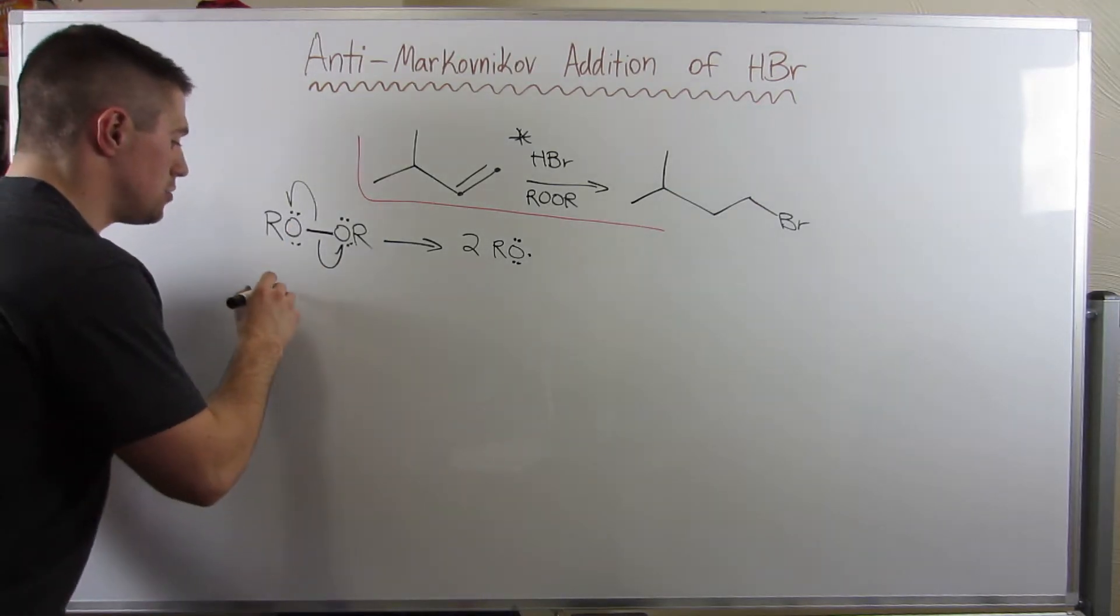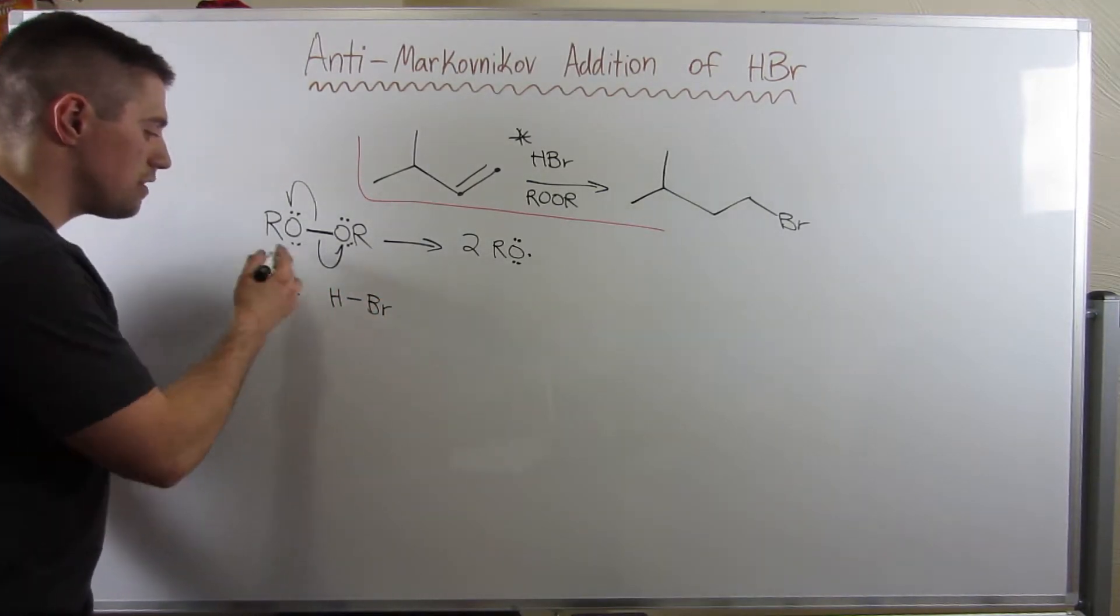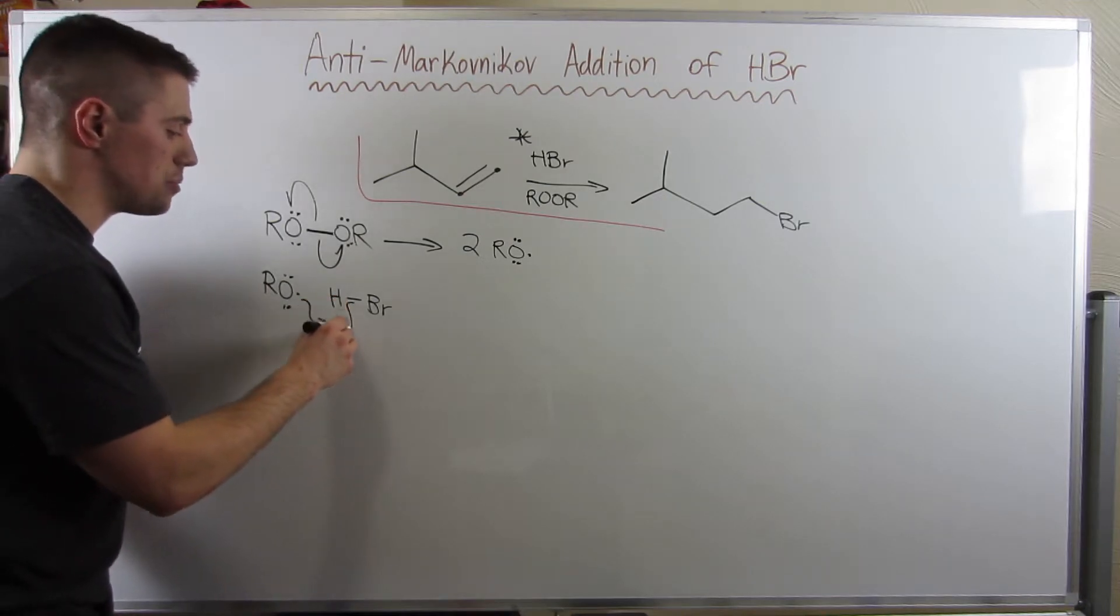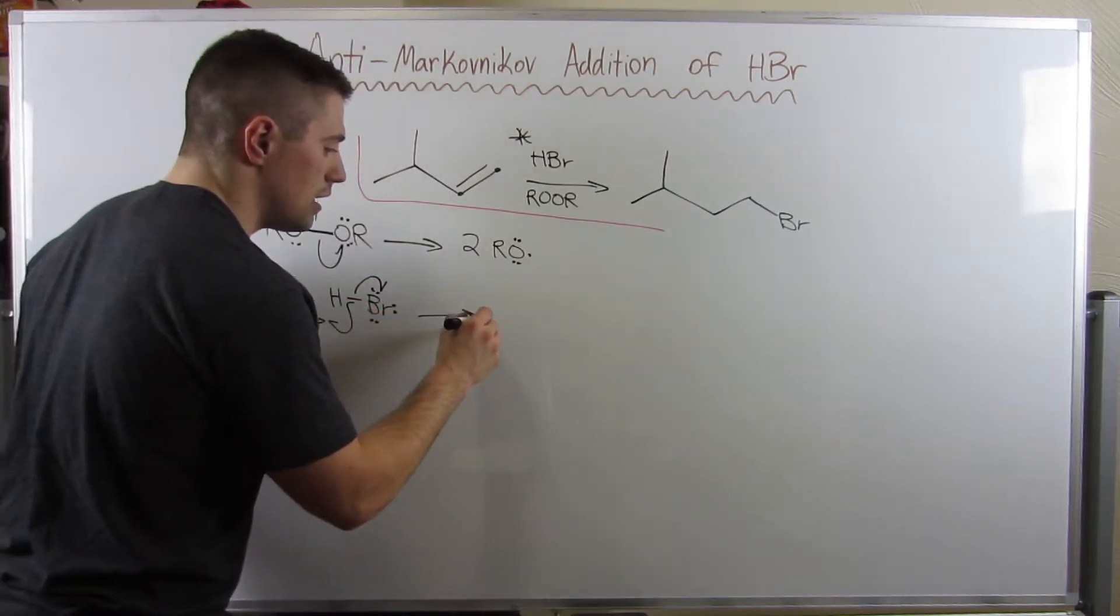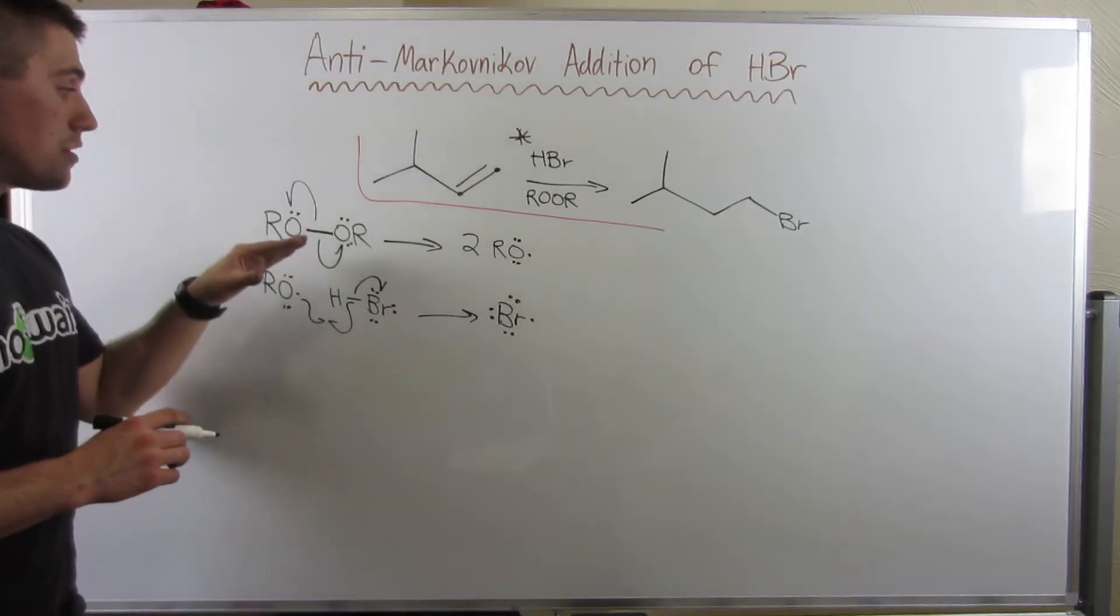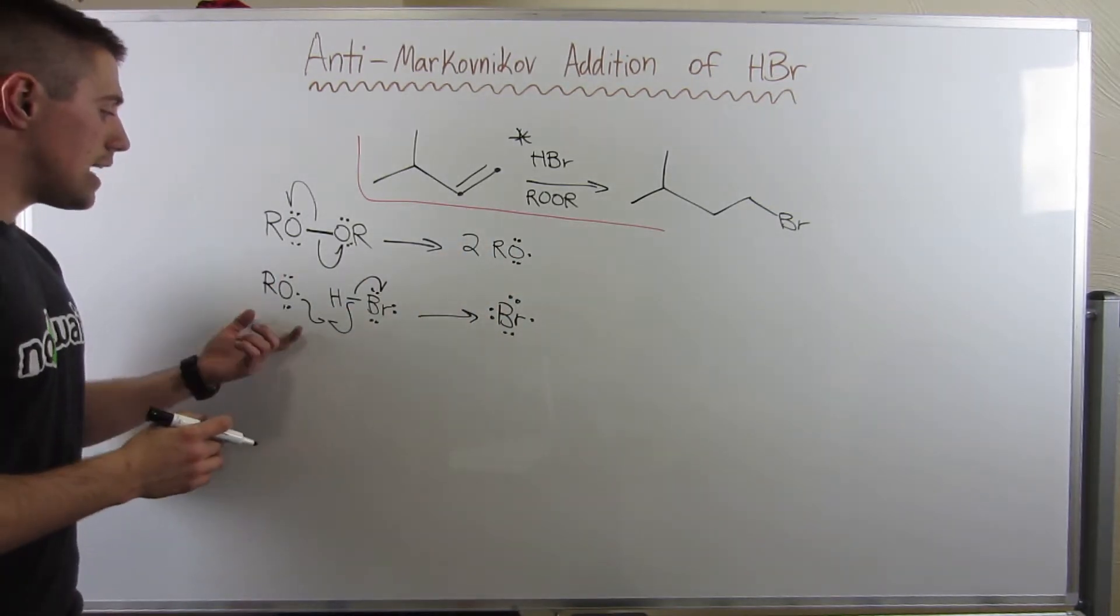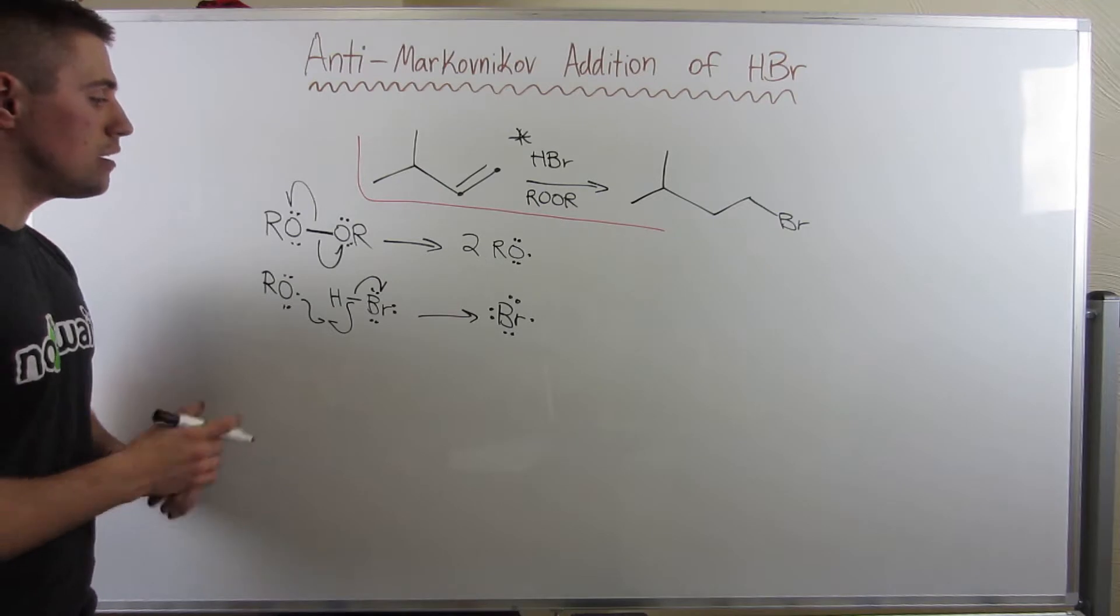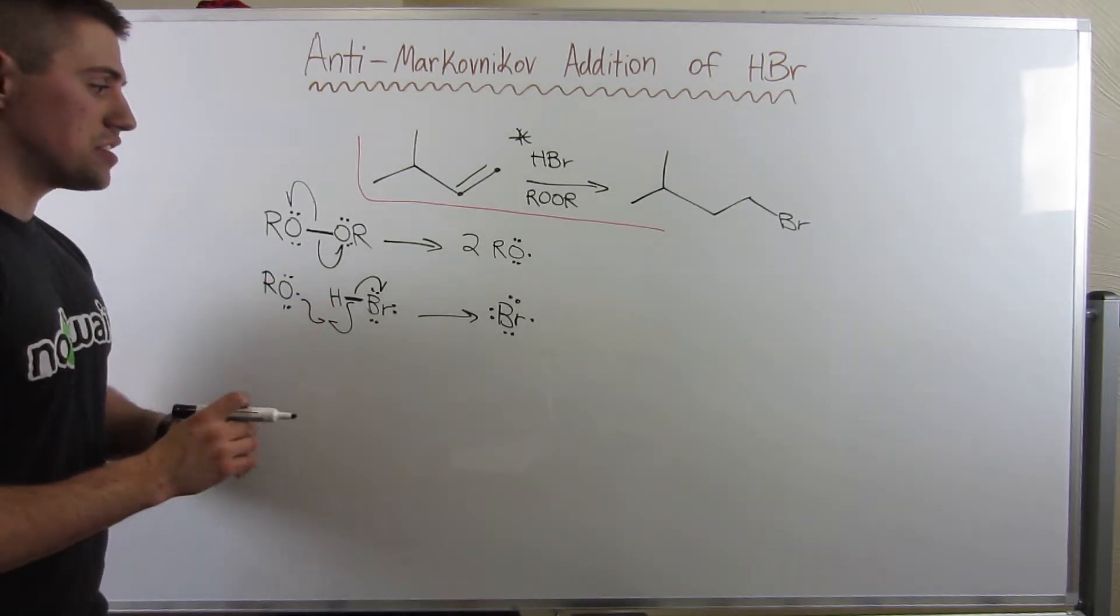So we're going to make two of these radicals right here, because these guys both have two electrons, two electron pairs to start with. This is like the initiation step. Then what's going to happen is you take that radical and you're going to move on over to HBr. And this radical oxygen is just going to pick off, he's going to abstract this hydrogen in HBr, which leaves HBr with a radical electron, which gives us a bromine radical.